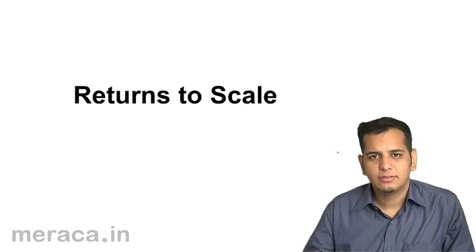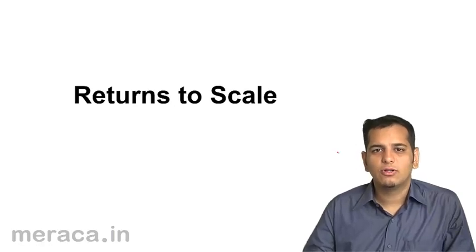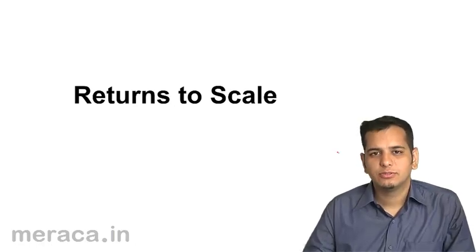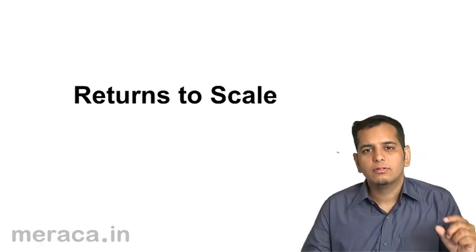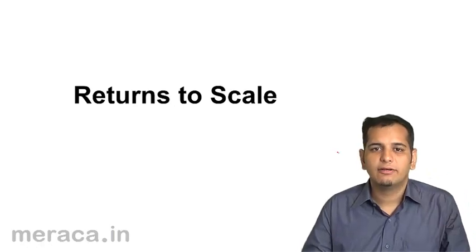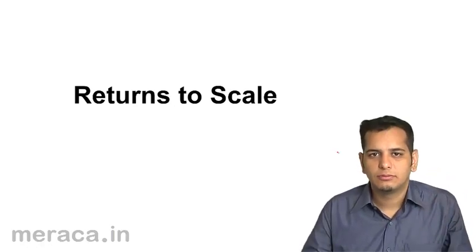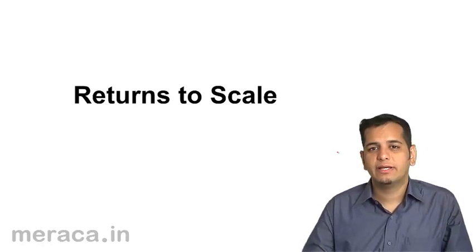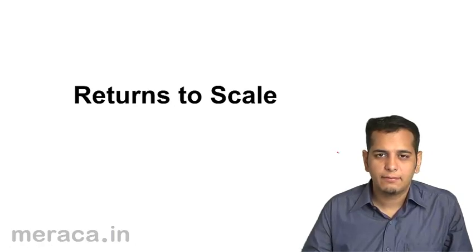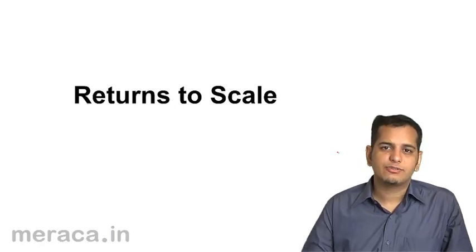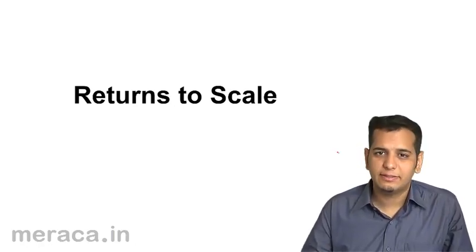Welcome back friends. In the last session, we understood what is the law of variable proportions. We said the law of variable proportions means the change in the level of output with the change in the level of only one input. We know that production is made possible with the help of factors of production. But in the law of variable proportions, all the other factors of production remain constant except for one.